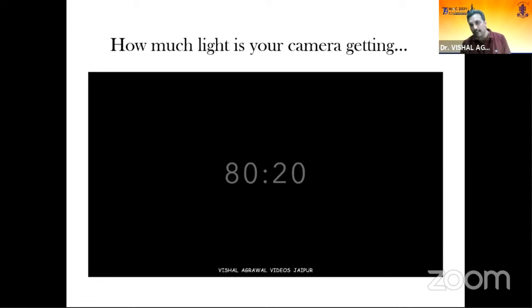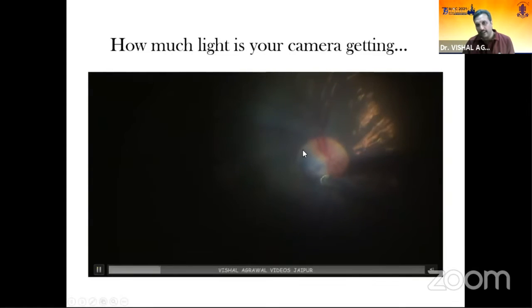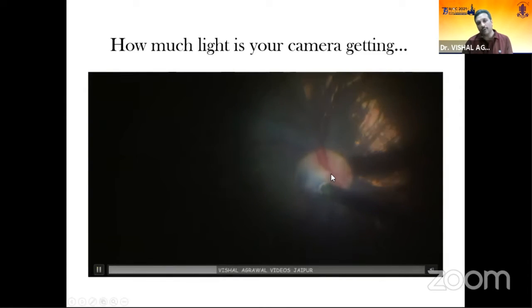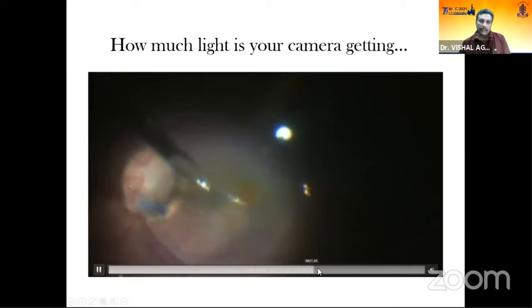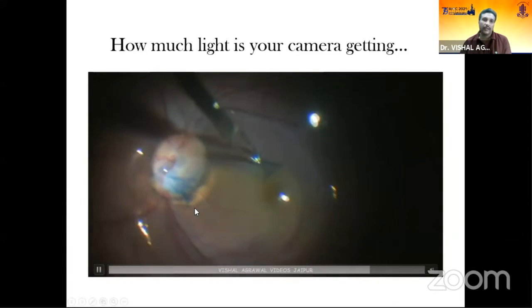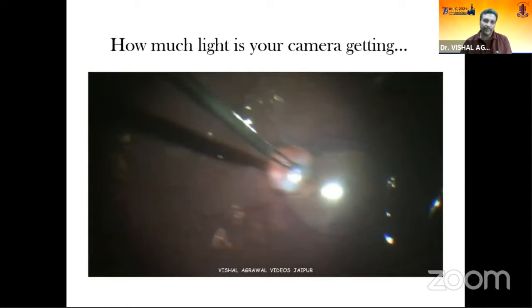How much light your camera is getting is very important, which is why you should know the details of your beam splitter. Previously most beam splitters from Zeiss came in 50/50 — meaning 50% of light reached you and 50% to the camera. Newer models are 80/20. In a 50/50 setup with an optic disc pit case in a pediatric patient, I had to increase illumination for optimal recording. With an 80/20 beam splitter, another optic disc patient came through clearly without any adjustment to illumination or brightness.